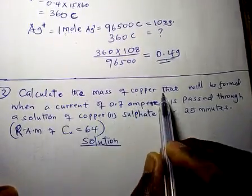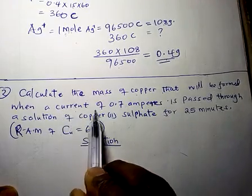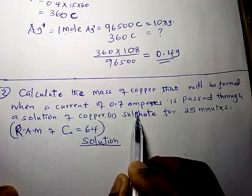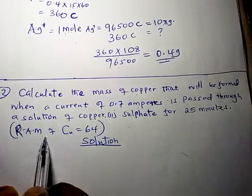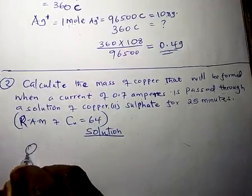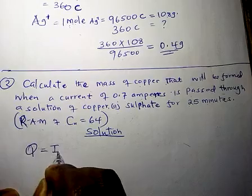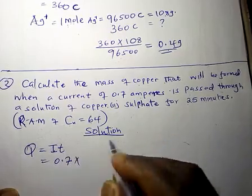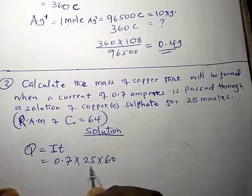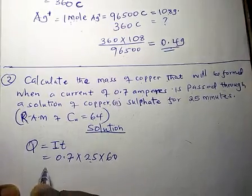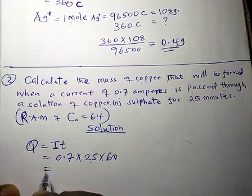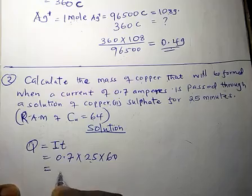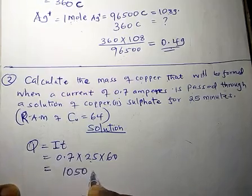Calculate the mass of copper that will be formed when a current of 0.7 amperes is passed through a solution of copper(II) sulphate for 25 minutes. RAM of copper is 64. First, we get the quantity of electricity: current times time is 0.7 times 25 minutes times 60 to convert to seconds. This gives us 1050 coulombs.